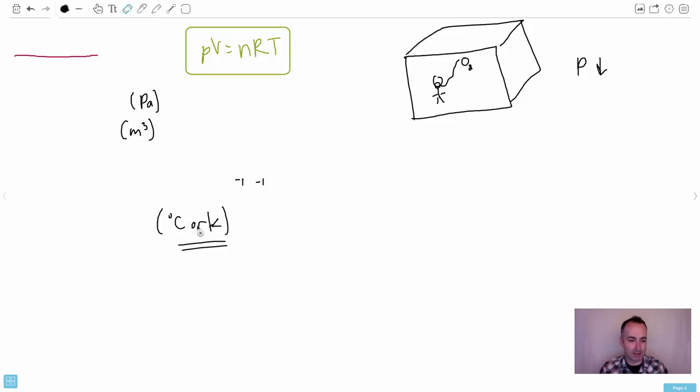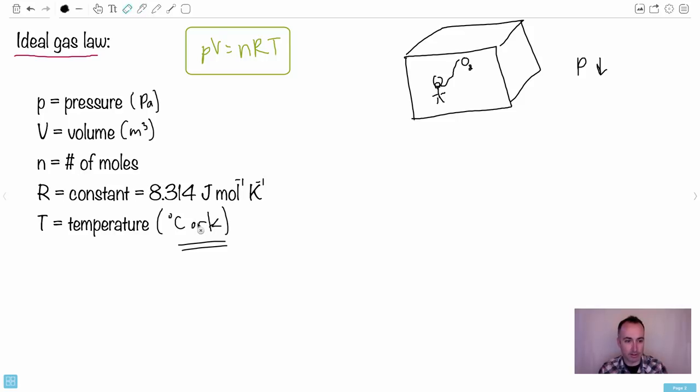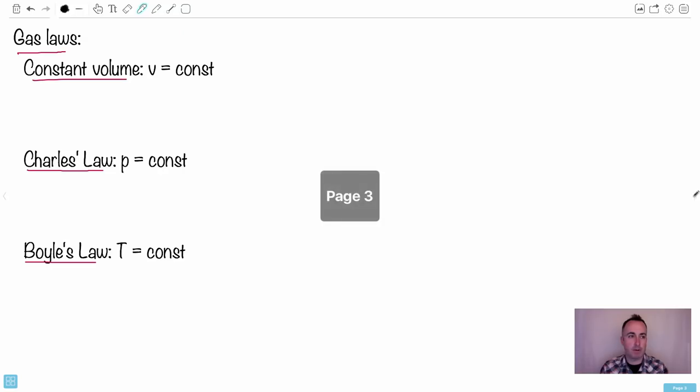By the way, it looks like it says cork and I don't mean cork here. I just meant to say C or K. So PV equals nRT, yes.